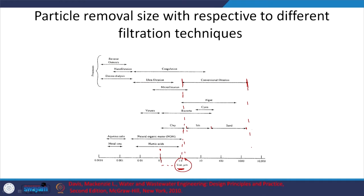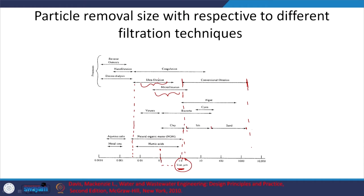1 micrometer size particles are usually the hardest to remove by conventional filtration. If we want to remove smaller particles, we need to look at microfiltration or ultrafiltration — what we refer to as surface filtration. With a membrane, most filtration occurs at or near the surface, whereas with sand filtration, filtration occurs across the depth. That is why we distinguish between depth filtration and surface filtration.